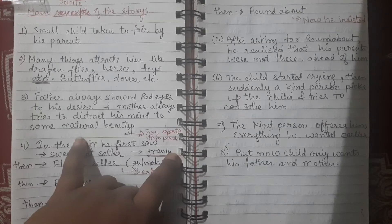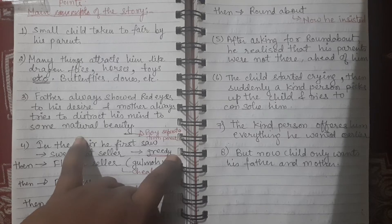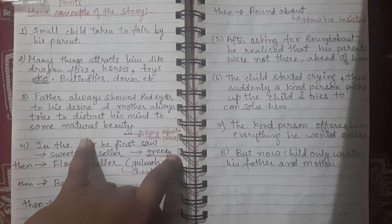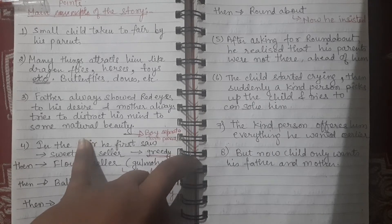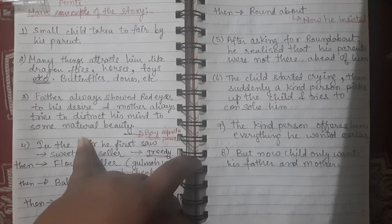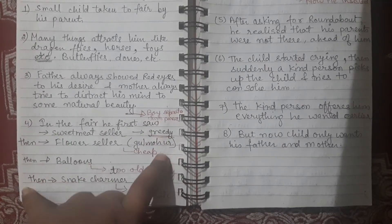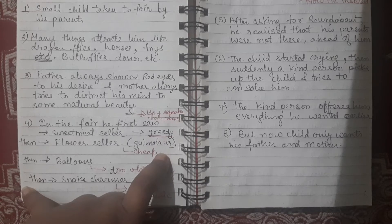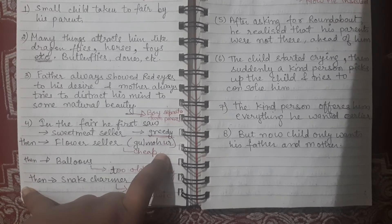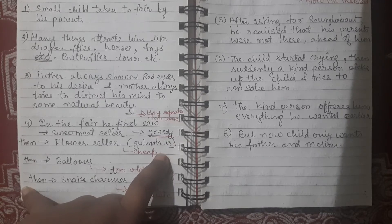The mother always tried to distract the child's mind, while the father always showed him red eyes with anger. The father would be angry and the child would back away. But the mother would try to gently redirect the child rather than scold him — she always supported in a positive way. So the child was going to the fair wanting everything, but neither parent fulfilled his desires, each opposing in their own way.